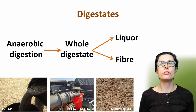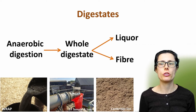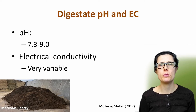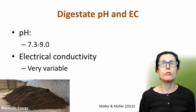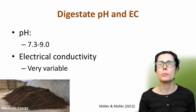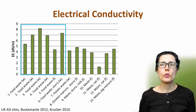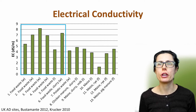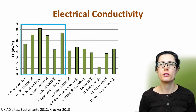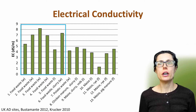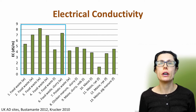When thinking about the potential end-use, it's important to know the nutrient content of the digestate. Thinking about pH first: the pH of digestates tends to be above neutral, with a range of generally between 7.3 and 9. With electrical conductivity, however, this is much more variable. This graph shows just how variable digestate electrical conductivity is. Food waste-based digestates are shown in the blue triangle. Generally, these have a higher conductivity than crop and manure-based digestates, which are shown on the right-hand side of the graph. So food waste digestates tend to have a higher salt content, and therefore have a higher conductivity.